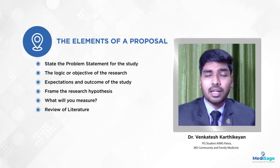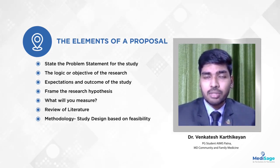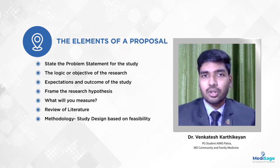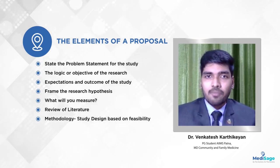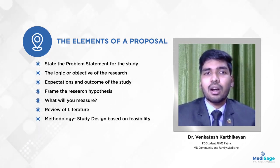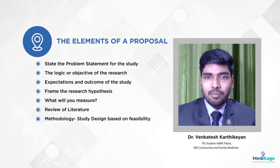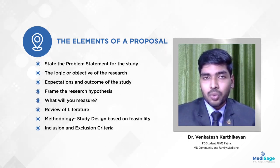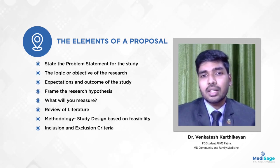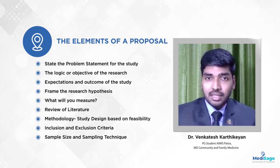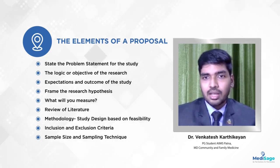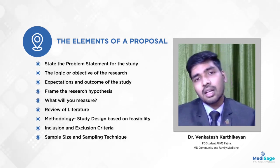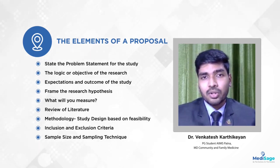Next comes the very important part: the methodology. How we are going to do the study requires the most focus. First is the study design — whether you're doing a cross-sectional study, case-control study, cohort study, or a randomized control trial. That can be decided based on your literature review and feasibility. Next, who are going to be the study participants? What is the inclusion criteria and exclusion criteria? Once you determine the study participants and setting, you should move towards calculating sample size and sampling techniques — whether it's simple random sampling, systematic random sampling, convenient sampling, or snowball sampling.